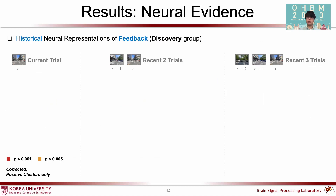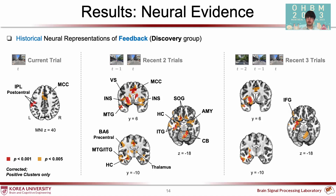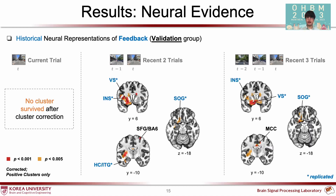We found evidence of historical neural representations. Compared to the current trial model, the recent two trials model was represented widely in the brain, including the ventral striatum, insula, hippocampus, and superior orbital gyrus. Similar clusters were also found in the recent three trials model, suggesting that the brain retains even three learning episodes. Most importantly, historical feedback representations were replicated in the validation group, with both recent two and three trial models showing replicated clusters in the ventral striatum, insula, and superior orbital gyrus.